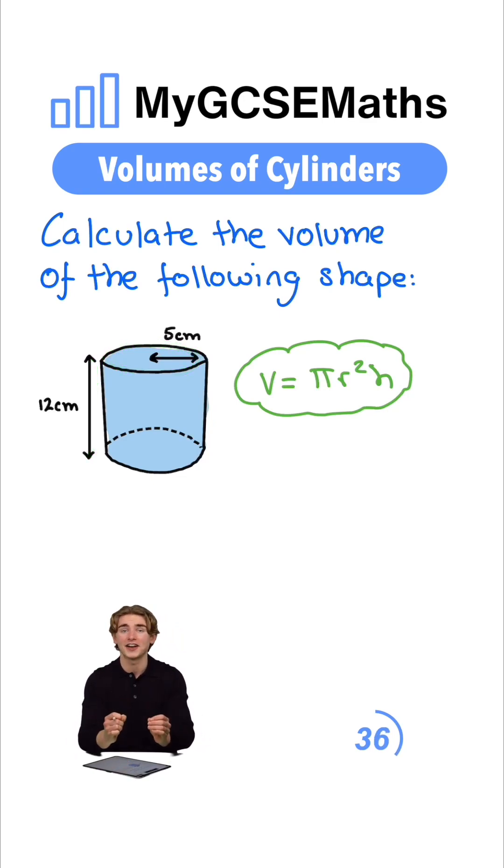Now let's plug in our actual numbers. We're going to have our volume equal to π times our radius squared. Our radius is 5, so we're going to have 5² times our height of 12.